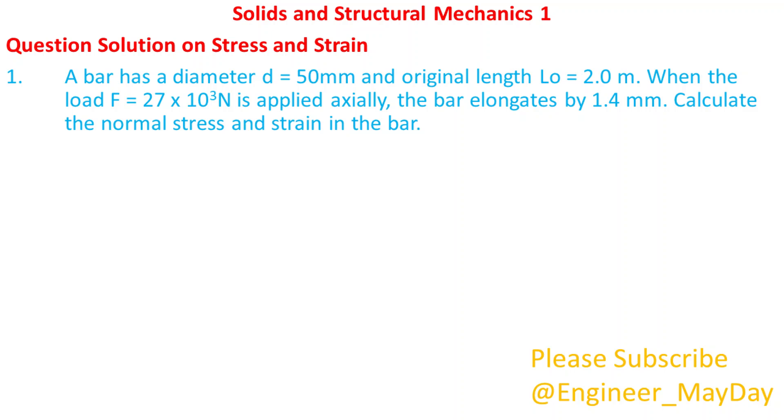Let's tackle this question. A bar has a diameter d equals 50 millimeters and original length lo equals 2.0 meters. When the load f equals 27 times 10 to power 3 newtons is applied axially, the bar elongates by 1.4 millimeters. Calculate the normal stress and strain in the bar.